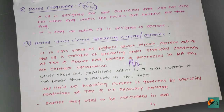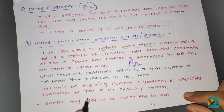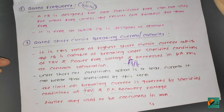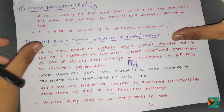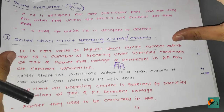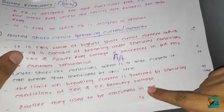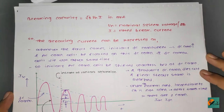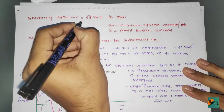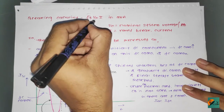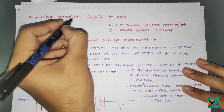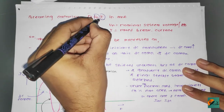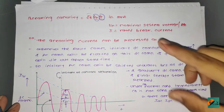The limit on breaking current is governed by specified conditions such as transient recovery voltage and power factor recovery voltage. In earlier days, breaking capacity was expressed in MVA so that fault levels could also be determined. Nowadays, breaking capacity is expressed as: root 3 × nominal system voltage × rated breaking current, in MVA.